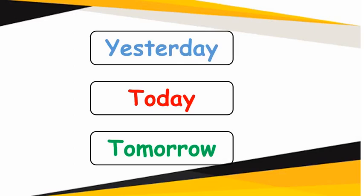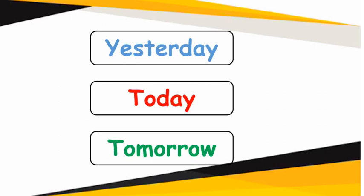I have used different colors for these three days. Yesterday is blue, today is red, and tomorrow is green. First, let's see the days of the week. Please repeat after me: Monday, Tuesday, Wednesday, Thursday, Friday, Saturday and Sunday.